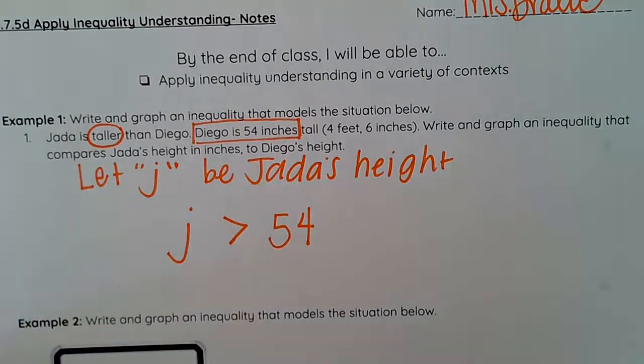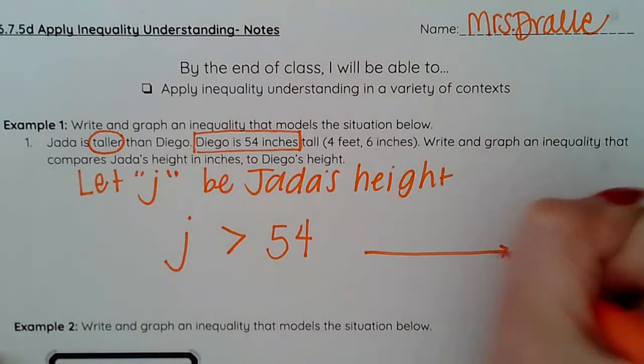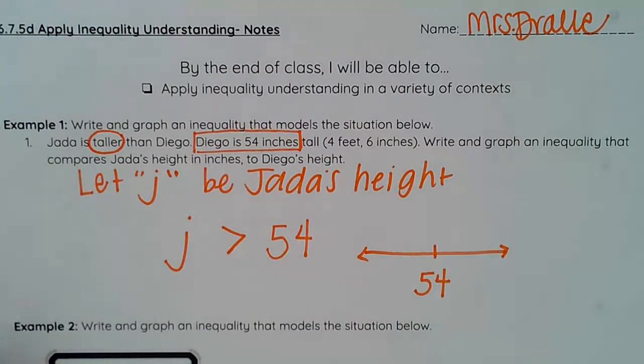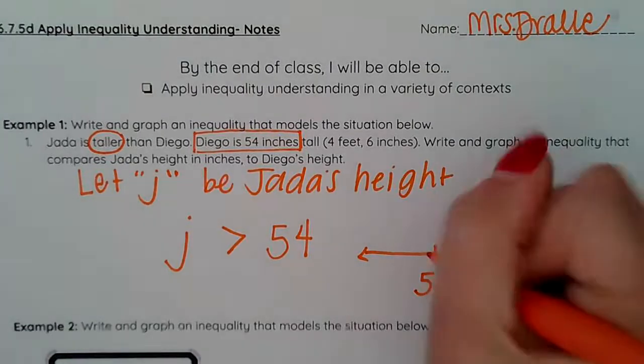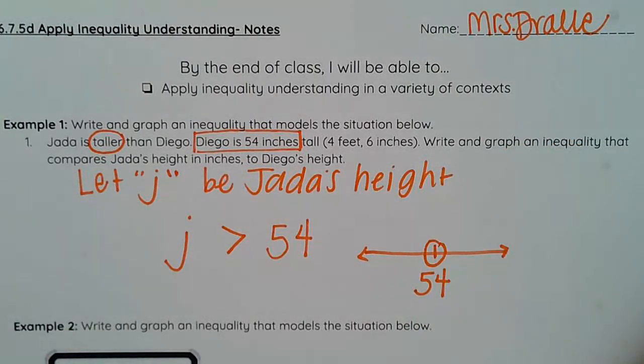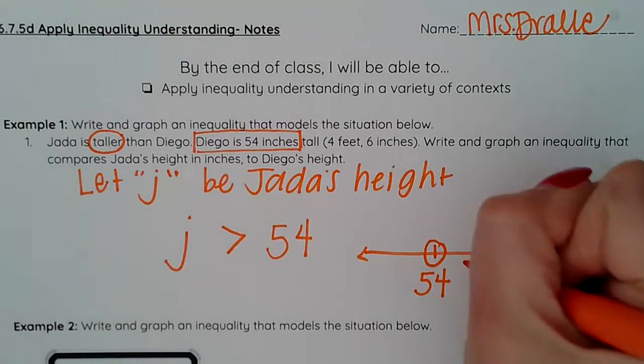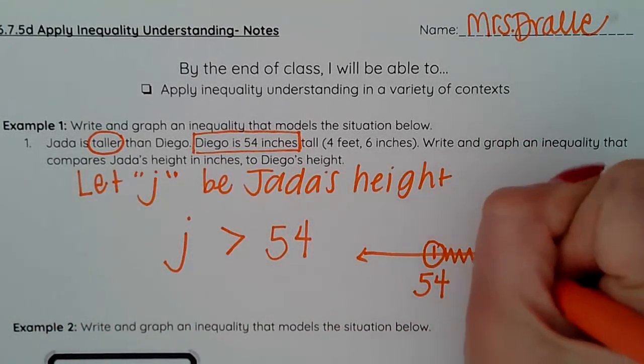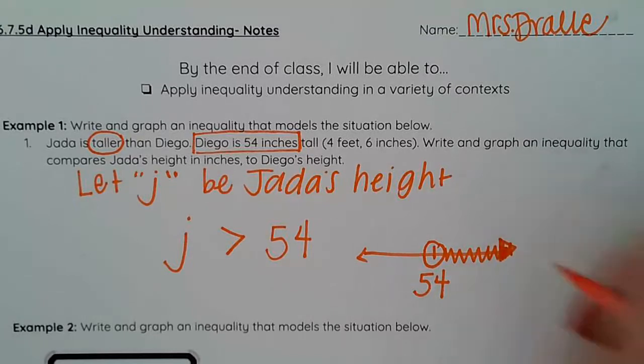Now I take that and turn it into a graph. I plot my 54. Because Jada cannot be 54 inches, I leave that circle open. I know that she needs to be taller. So I shade to the right.